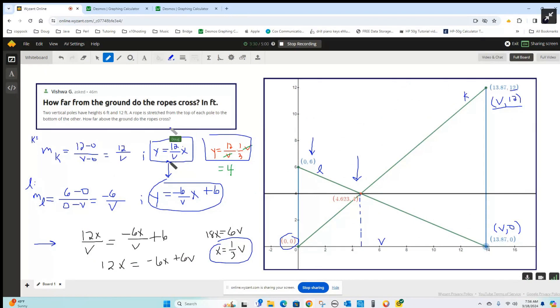Y equals 12 over V times one-third of V. The V's cancel out. That shows you that the Y-coordinate is independent of V because the V's cancel out. 12 divided by 3 is 4.